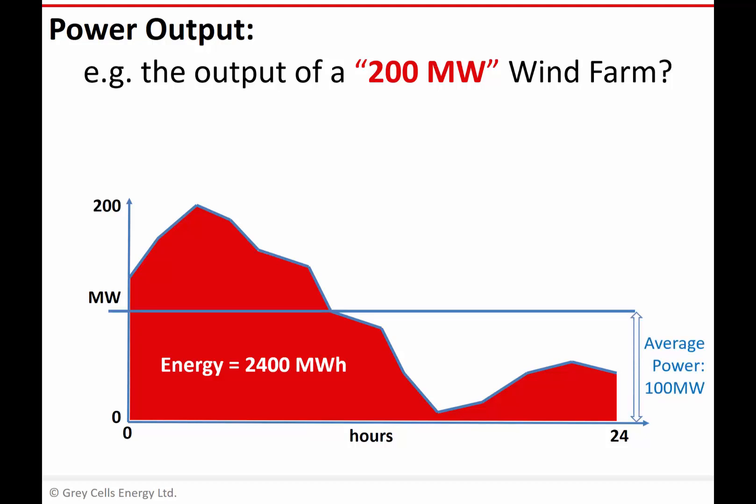We can also calculate the average power — either by looking at the power data at different times and calculating the average over the period, or, if we know the energy output, we can divide that by the number of hours over which it was generated. In this case, 2400 megawatt hours divided by 24 hours tells us the average rate of generation was 100 megawatts.